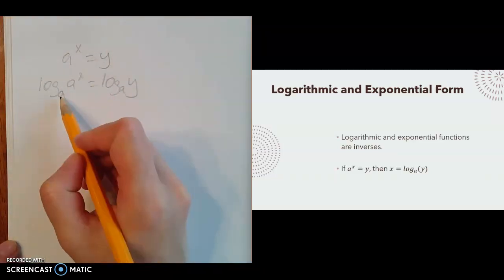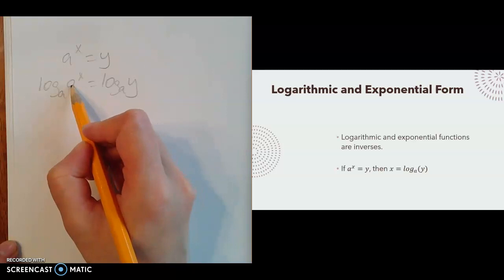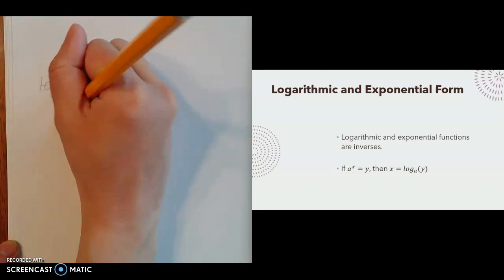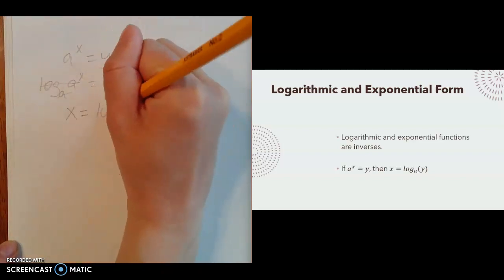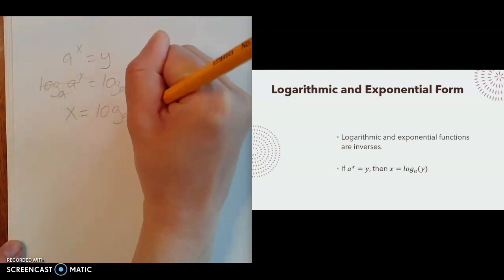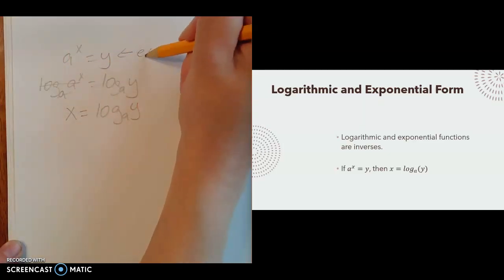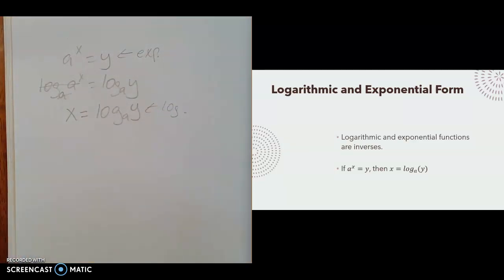Then that log base a and that base of a cancel out, and you're left with the exponent of x. So x equals log base a of y. This is the exponential form, and this is the logarithmic form. They are equivalent to each other, and if you're able to go back and forth between them, we're going to have a really great day today. Let's practice that.